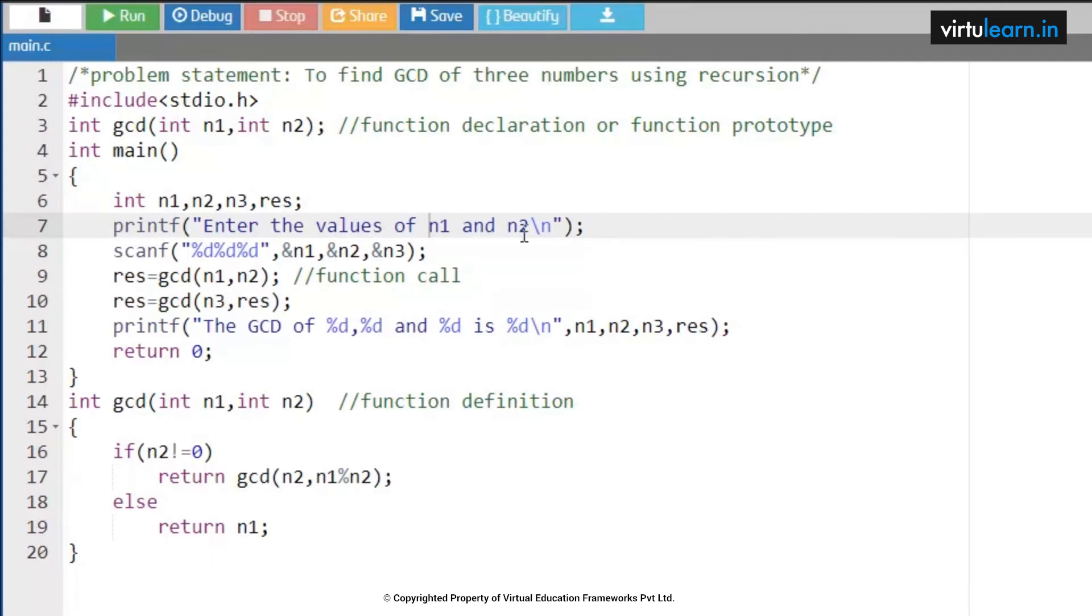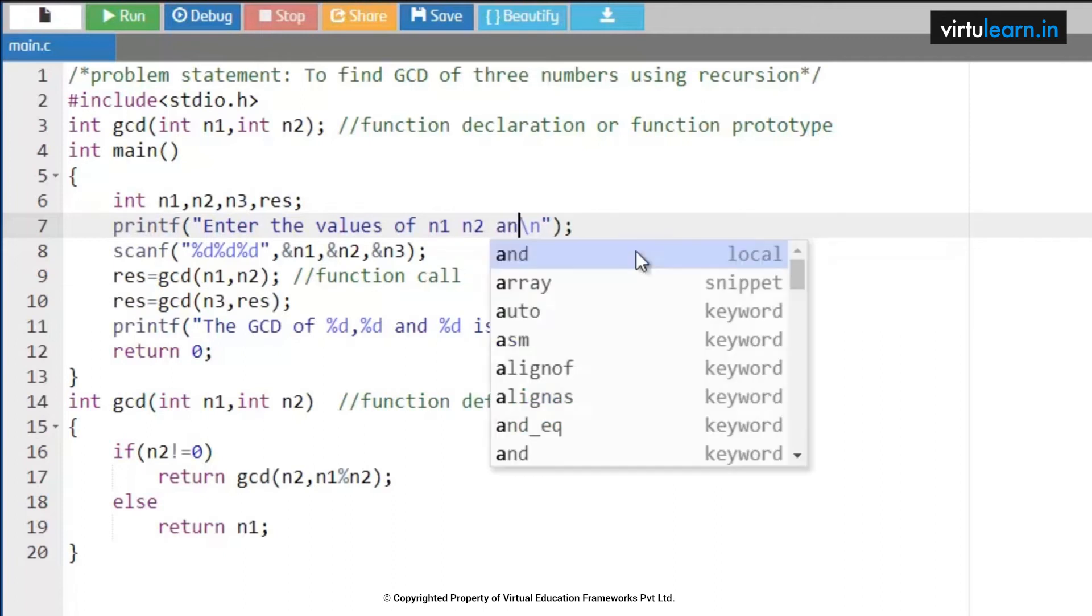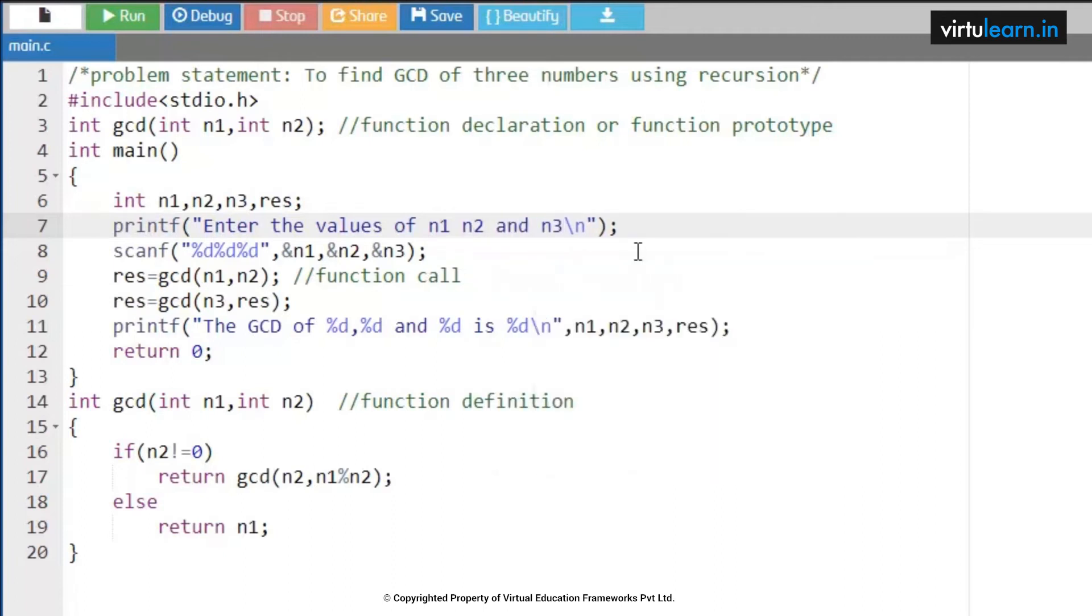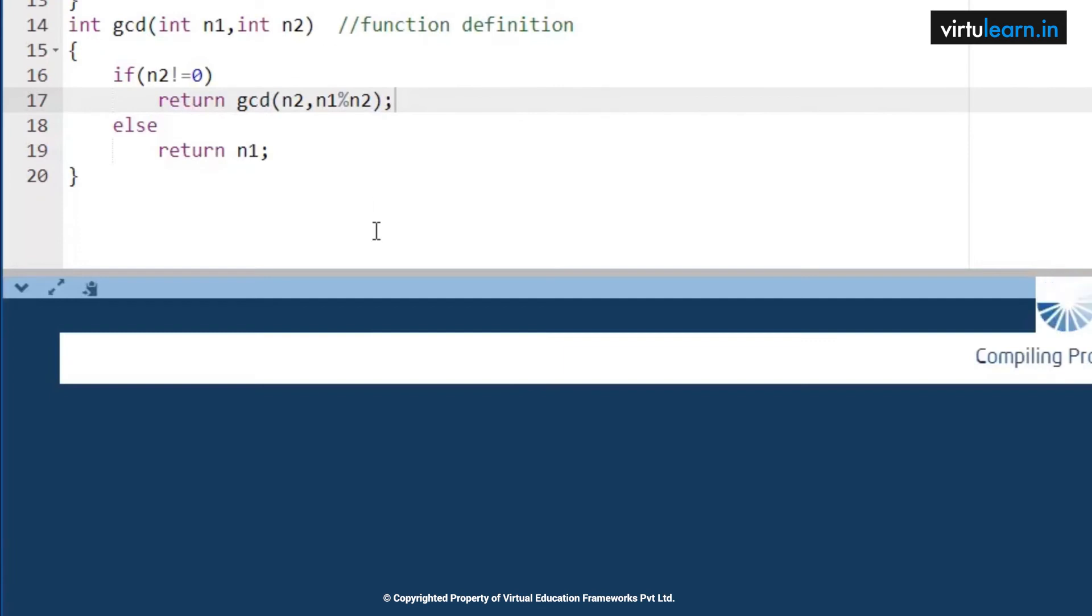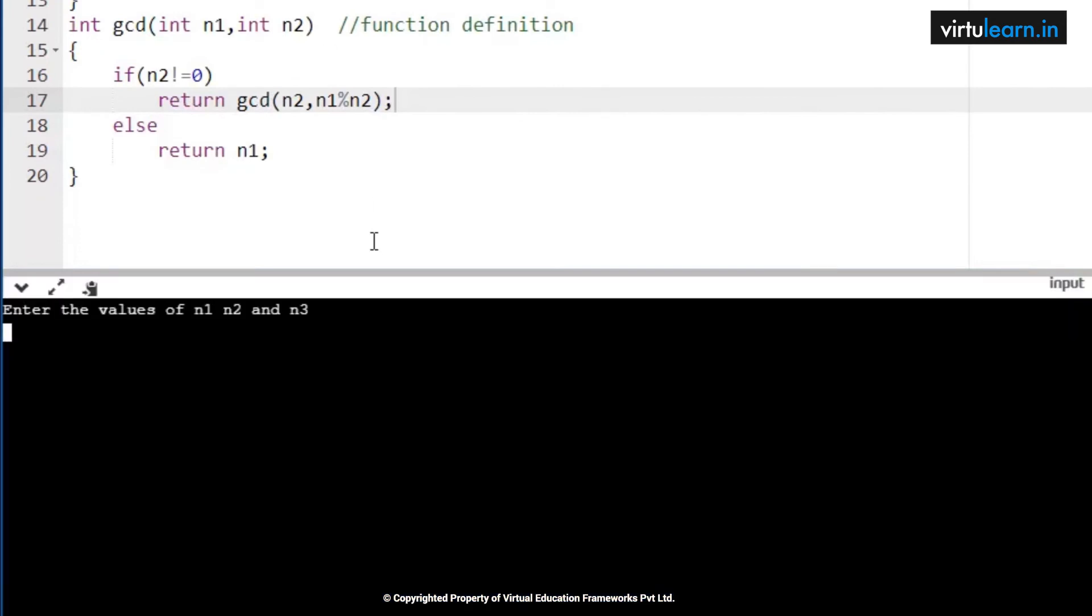Right, now let me execute the code and check whether I am going to get the proper GCD of three numbers, n1, n2, and n3. So here, enter the values of n1, n2, and n3. I am giving the n1 value as 10, n2 value as 20, and n3 value as 30.